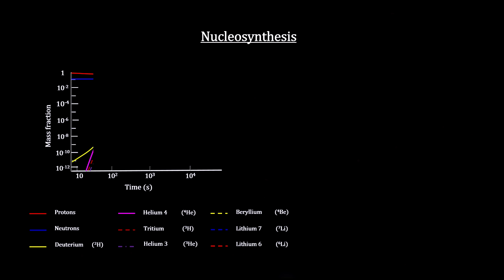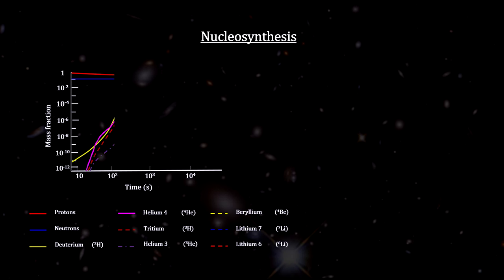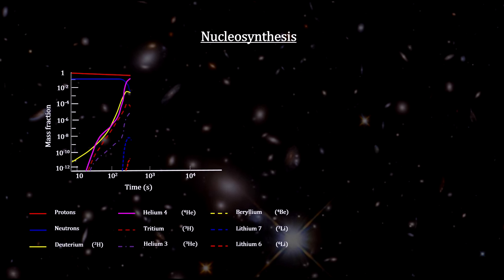The Lambda Cold Dark Matter Big Bang Theory predicts that the early universe contained mostly hydrogen and some helium and only traces of other elements.